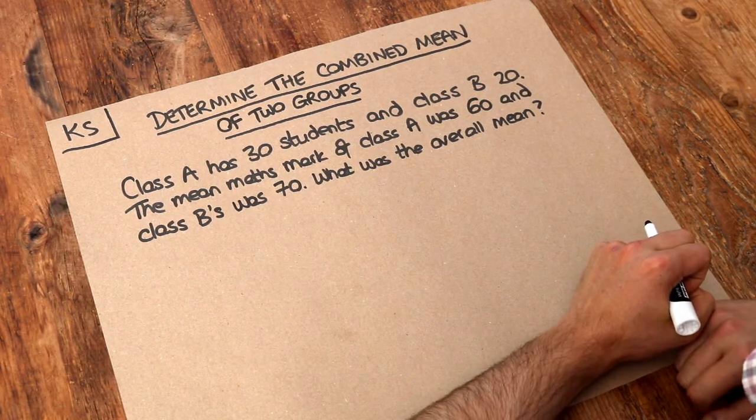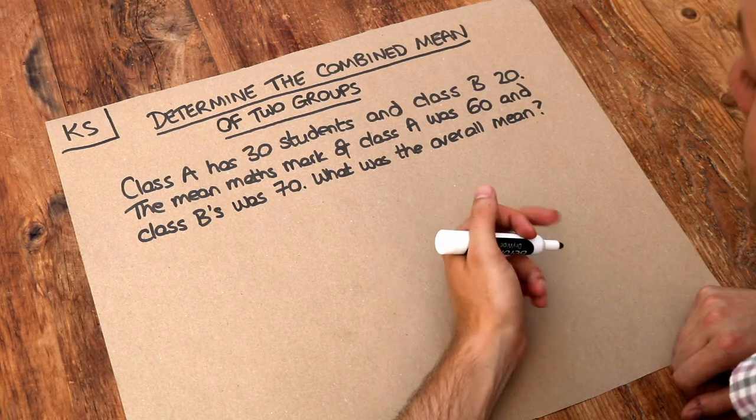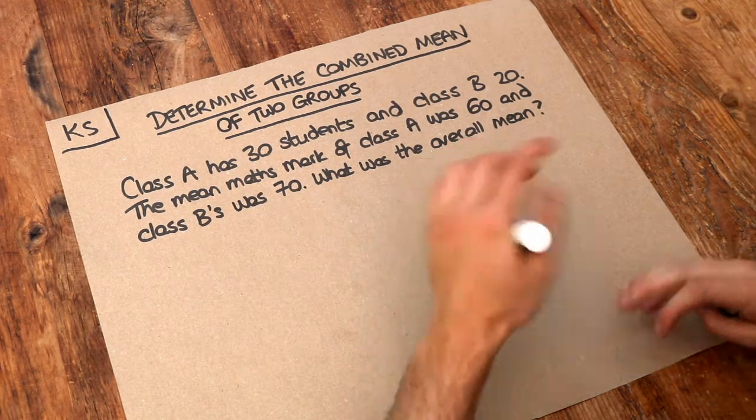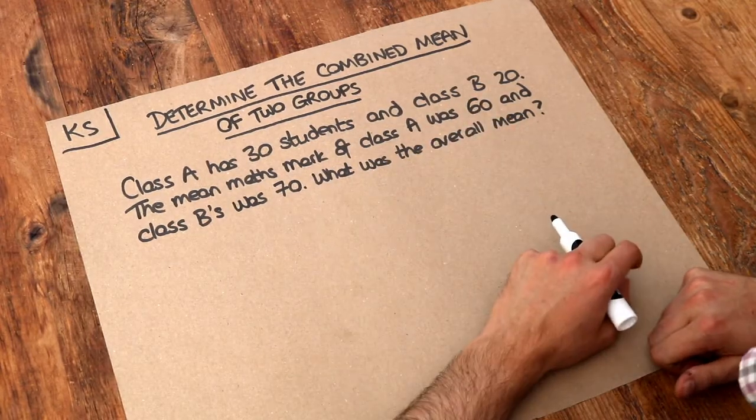But we want to find the overall mean. Now if the average of class A was 60 marks and the average of class B was 70 marks then the overall average of the two classes must be somewhere between 60 and 70 marks.